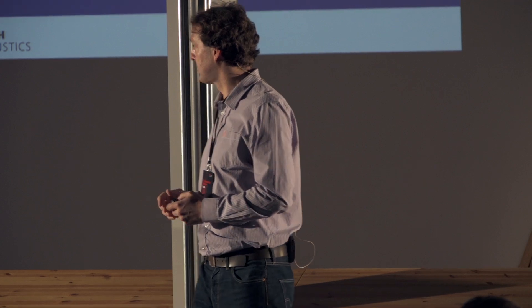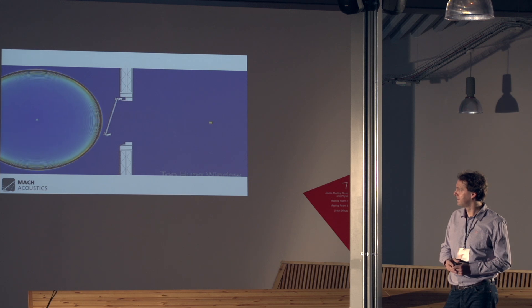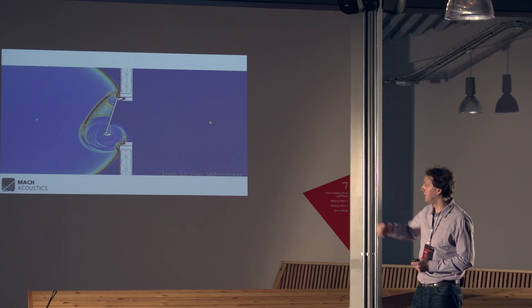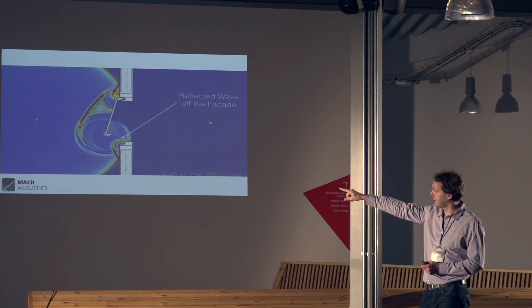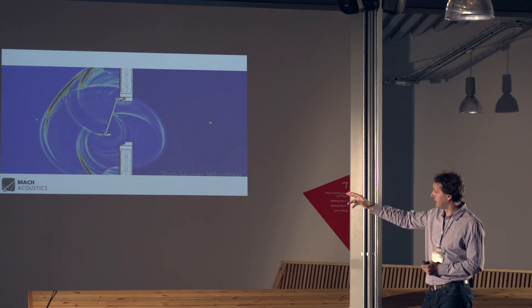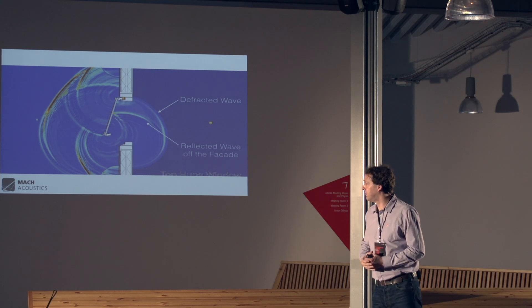And that's more or less what you would expect. If you now take a top-hung window, we can see the difference. As you can see here, the sound is diffracting around the window, coming in. It's reflecting off the facade at the bottom. And that is traveling back up, hits the window and re-travels in. So now we have more than one wave coming into the building.